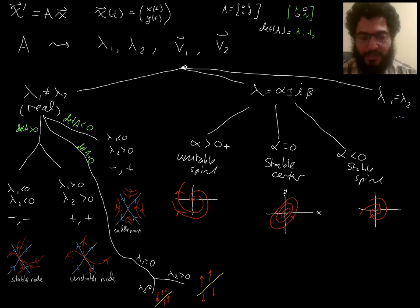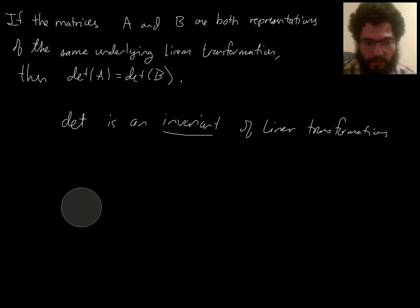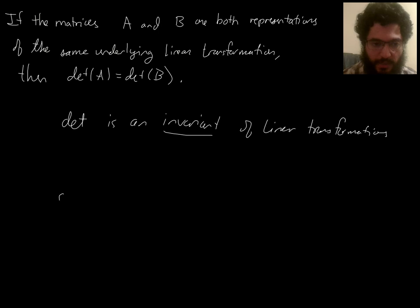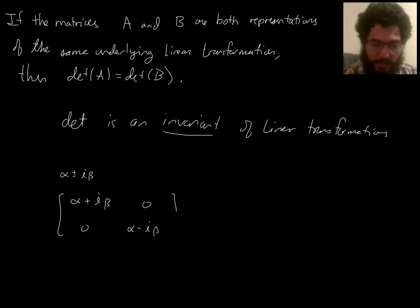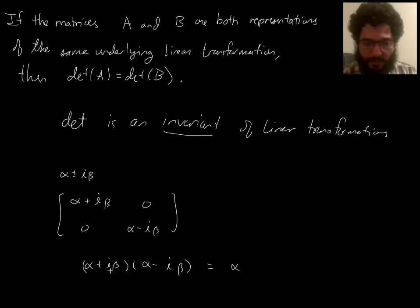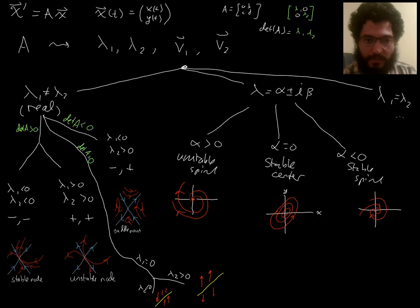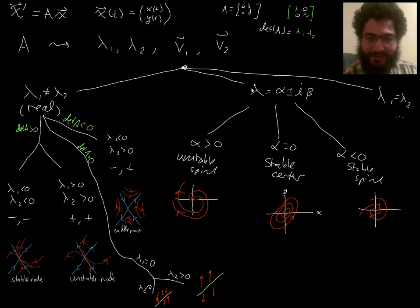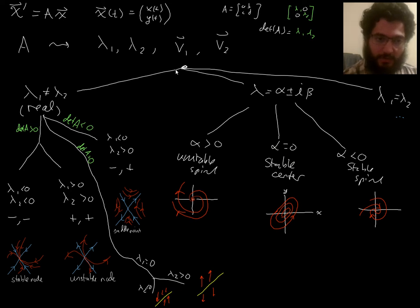What about when you're in the complex eigenvalue situation — does the determinant tell you anything? If alpha ± i·beta are the eigenvalues, then the diagonal form has alpha + i·beta and alpha − i·beta on the diagonal. The determinant is the product of the eigenvalues: (alpha + i·beta)(alpha − i·beta) = alpha² + beta², which is always a positive real number. So in the complex eigenvalue branch, the determinant is always positive — it being positive or negative doesn't distinguish anything within this branch.